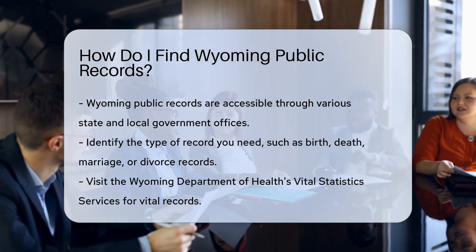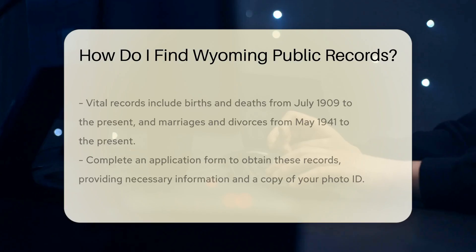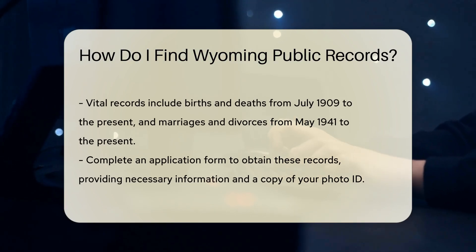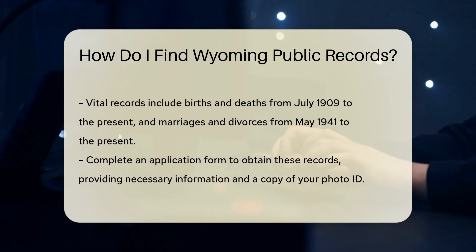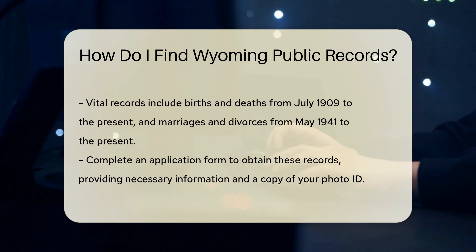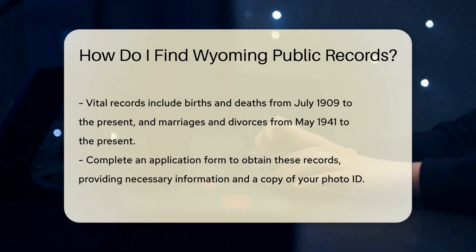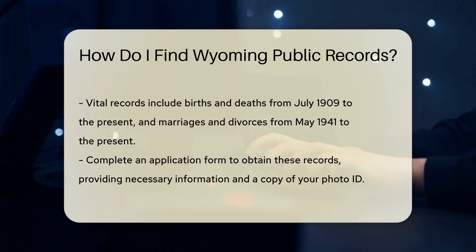To obtain these records, you must complete an application form. The form requires information such as the full name on the record, date of the event, and your relationship to the person. You must also provide a copy of your photo ID. There is a fee for obtaining these records. As of 2023, the fee for a certified copy of a birth, death, marriage, or divorce record is $20.